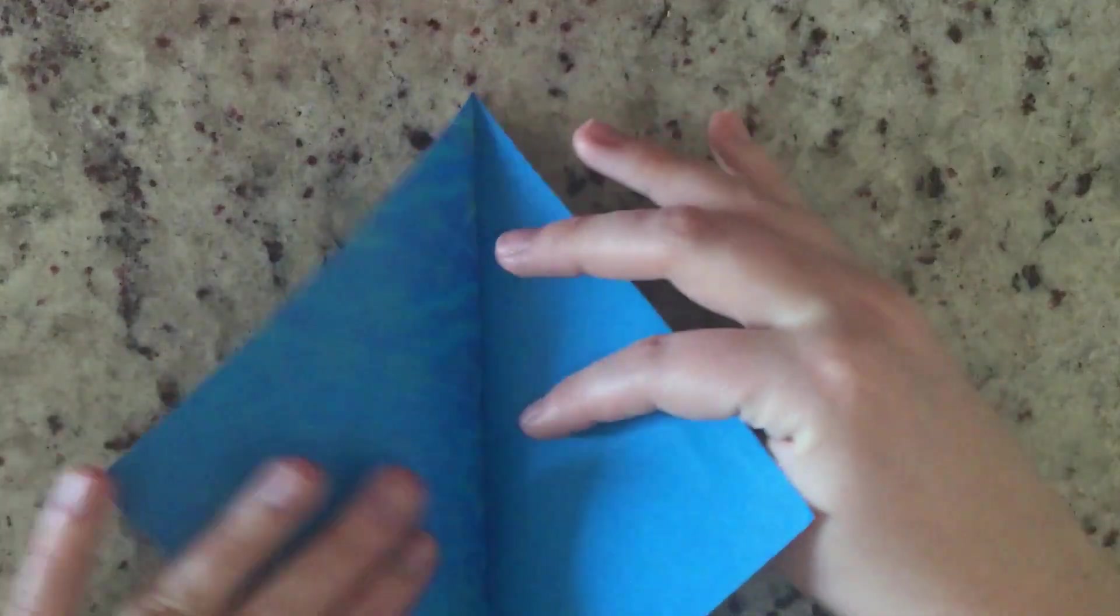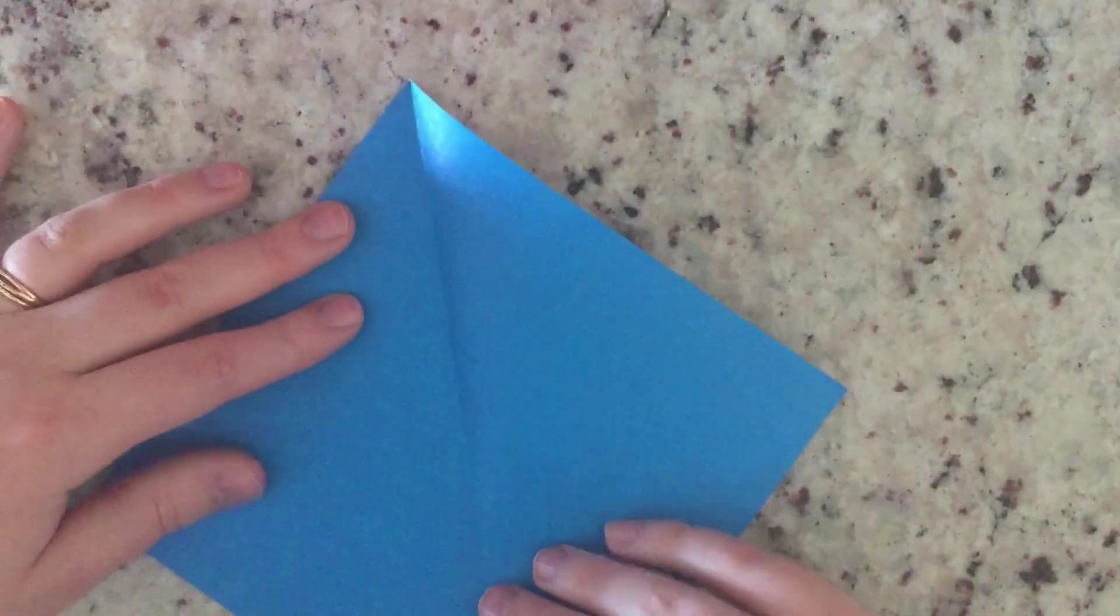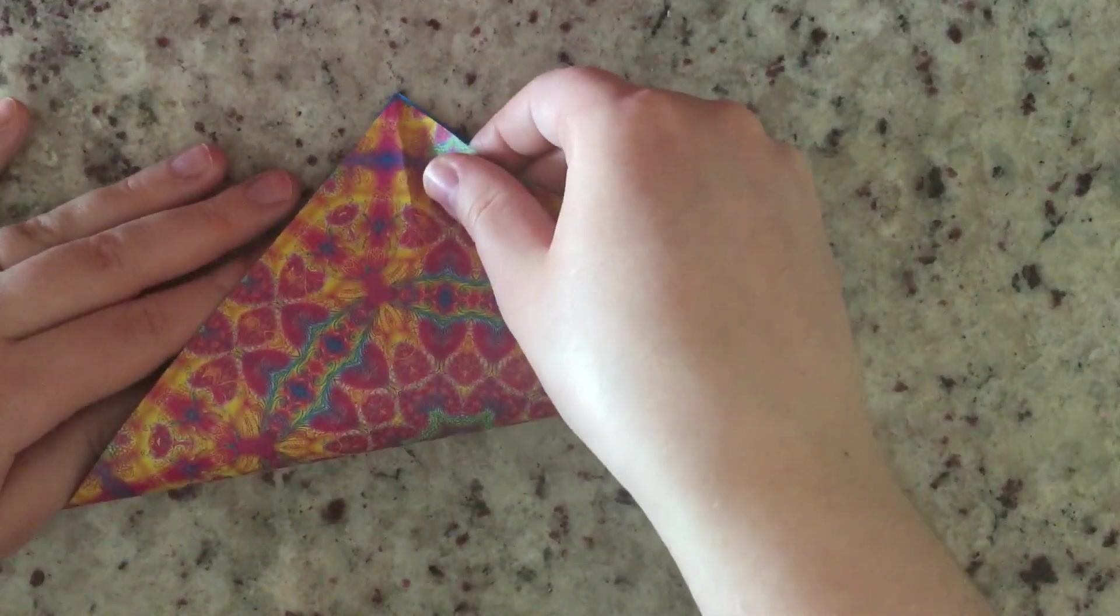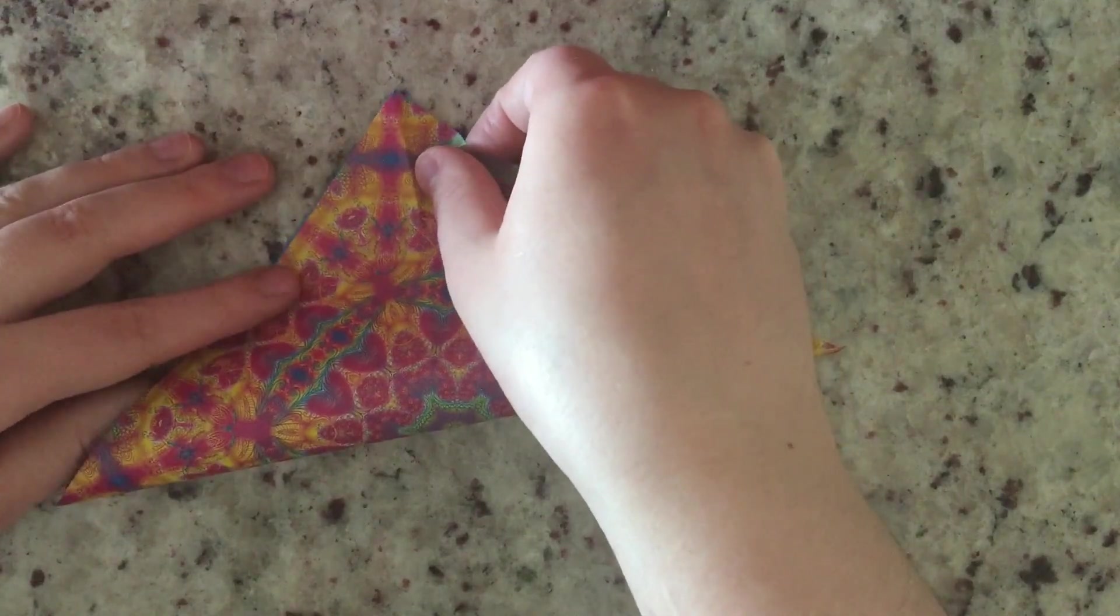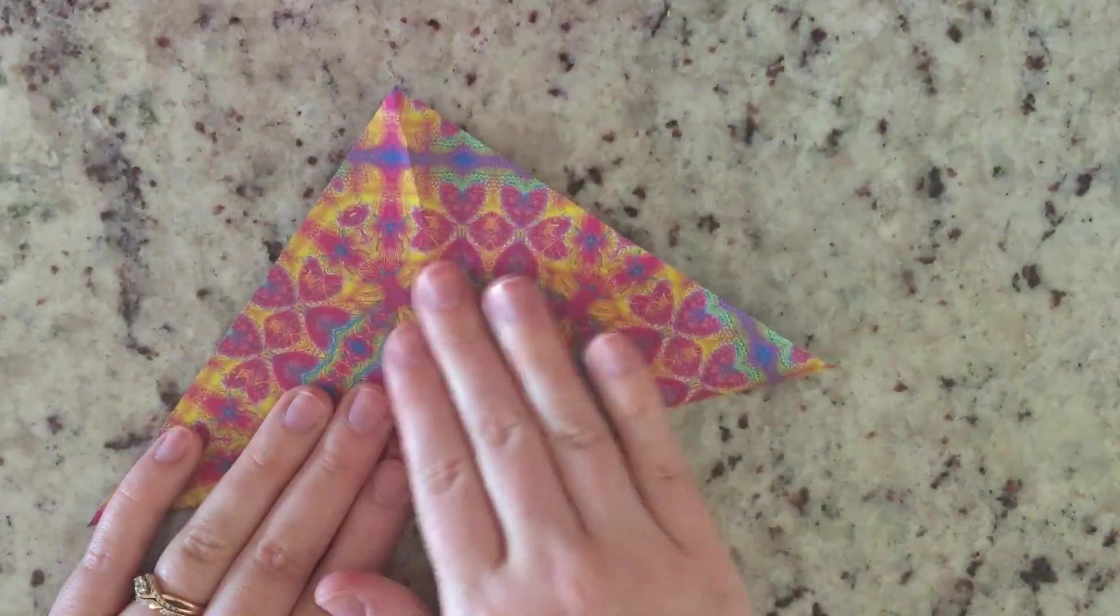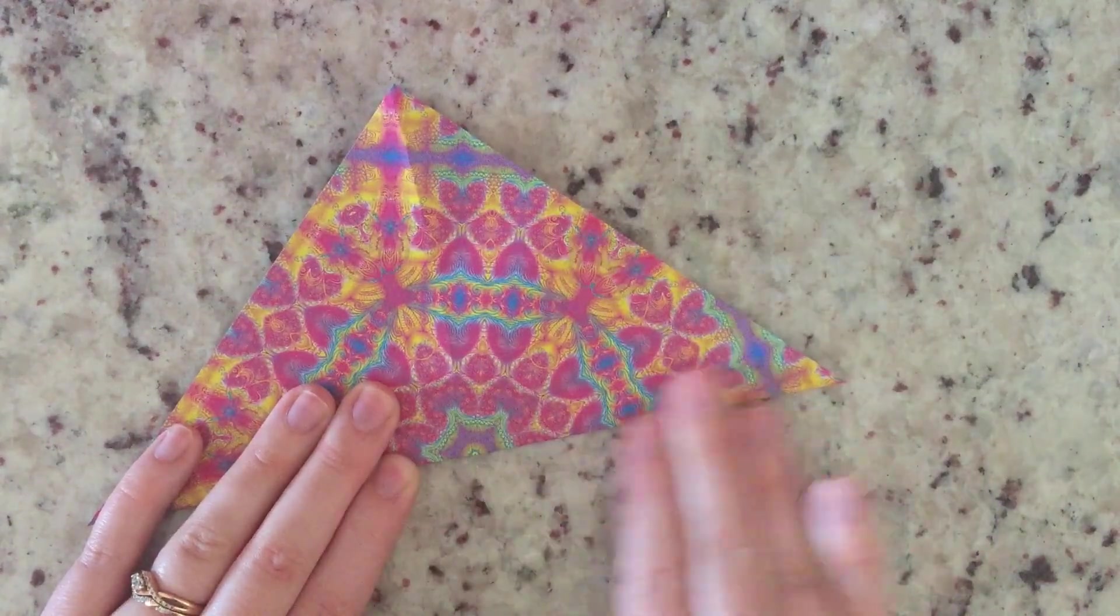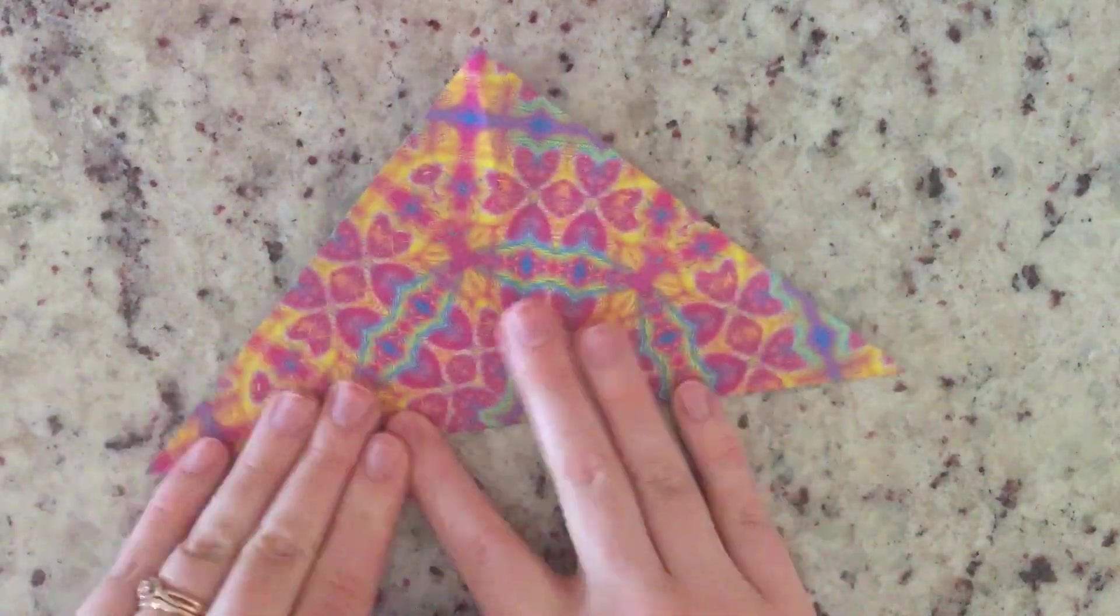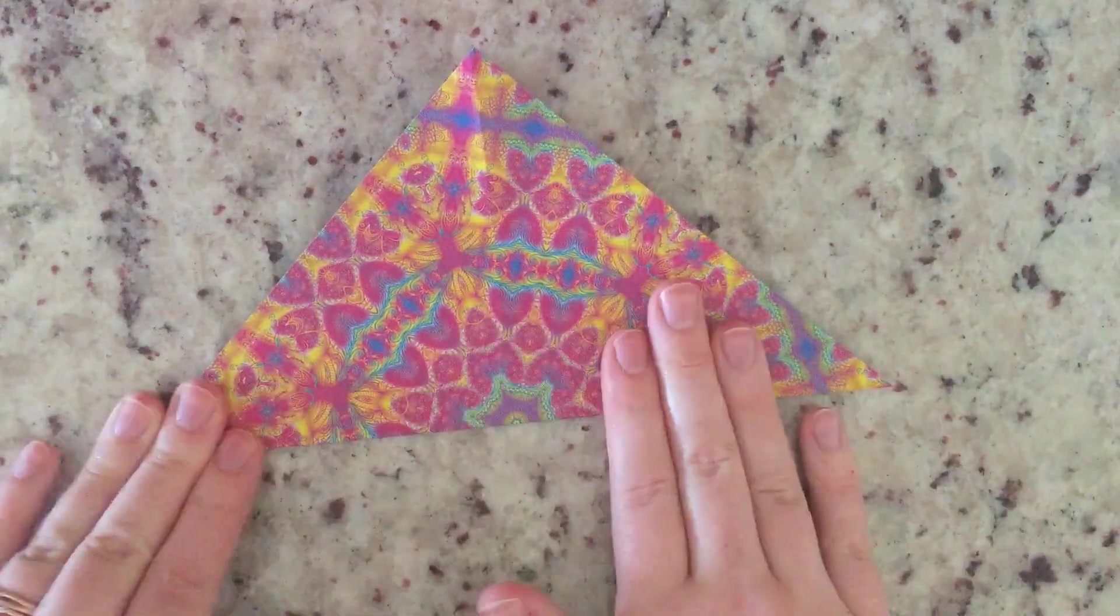Okay, so I'm going to unfold it and we're going to do the same thing with the opposite corners. So corner to corner, line up the edges pretty well and make a nice flatten fold really well.